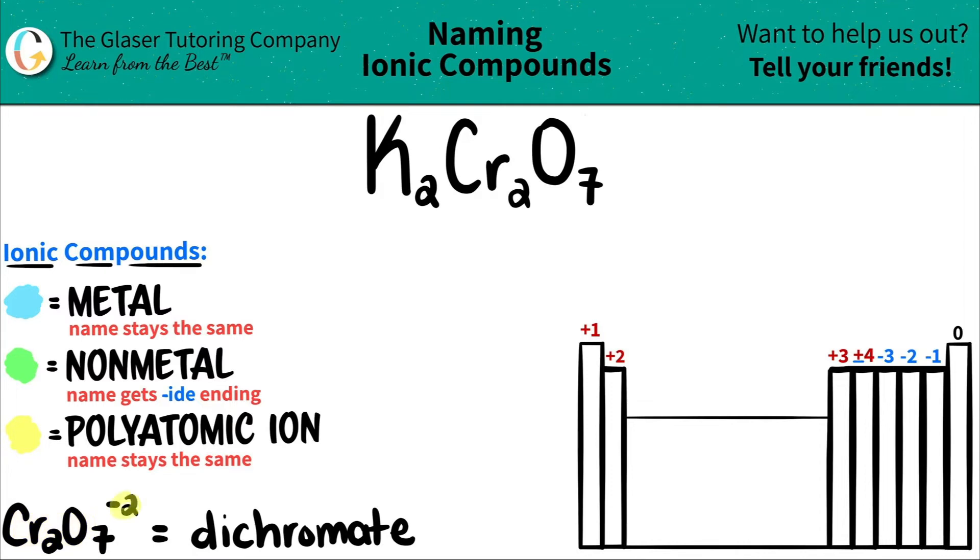Cr2O7 collectively has a negative two charge, and this is always called dichromate. And here is the Cr2O7. So I have all this accounted for. The only other element that we need to figure out is, what is potassium?